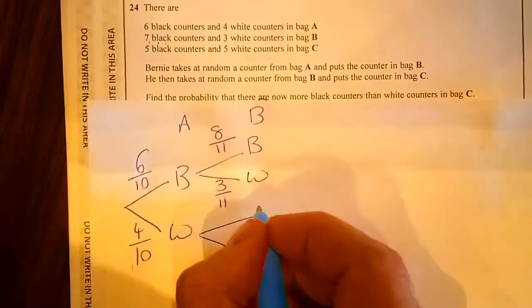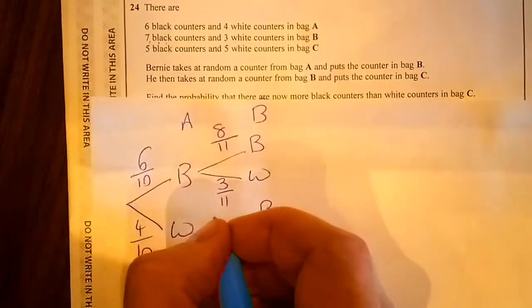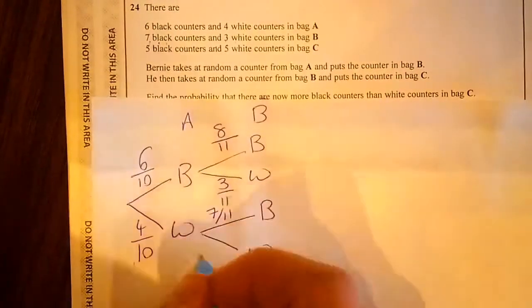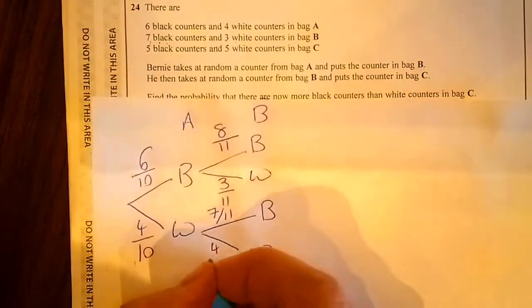If you took a white counter, you've still got 2 options which is black and white. There are still 7 counters out of 11. So here it would make it, because there's 3 here plus that one, make it 4 out of 11.